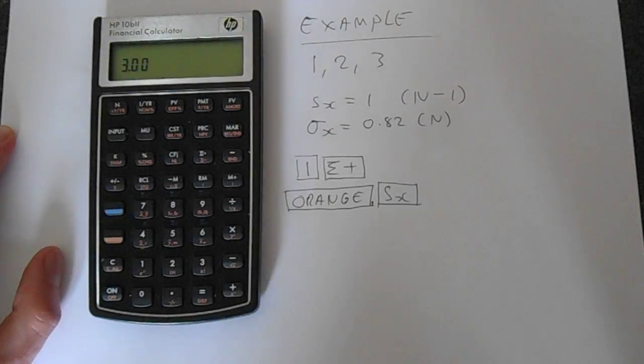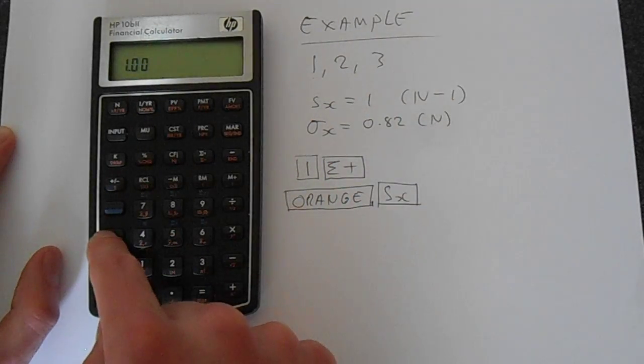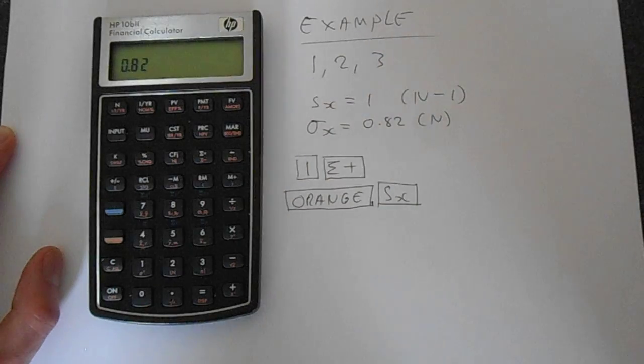And then we can just do the calculation, tell it what we want to calculate. If we press orange, and then this sx, we get 1 as expected. And then we press orange, and then we press sigma x, and this gives you the answer here.